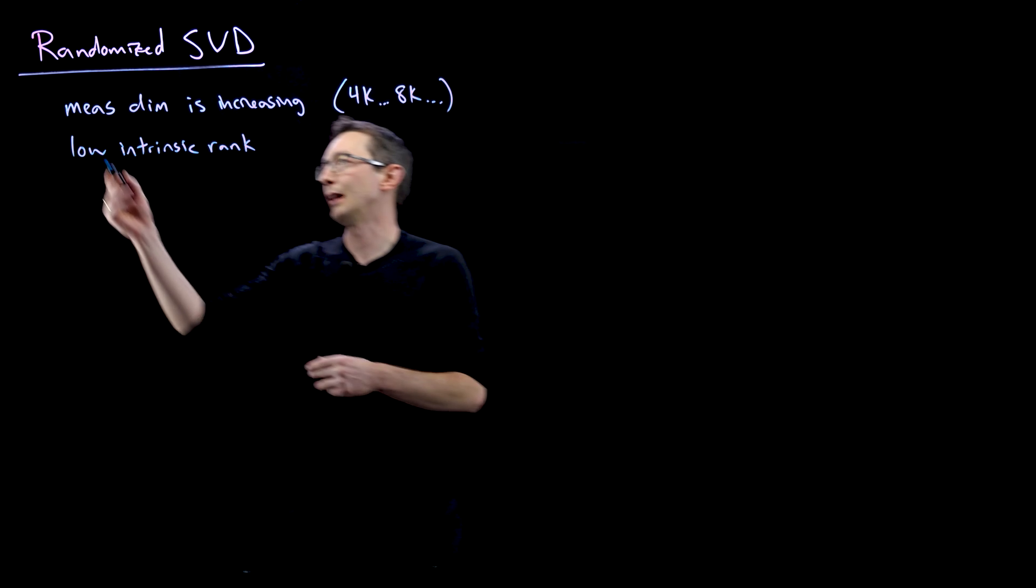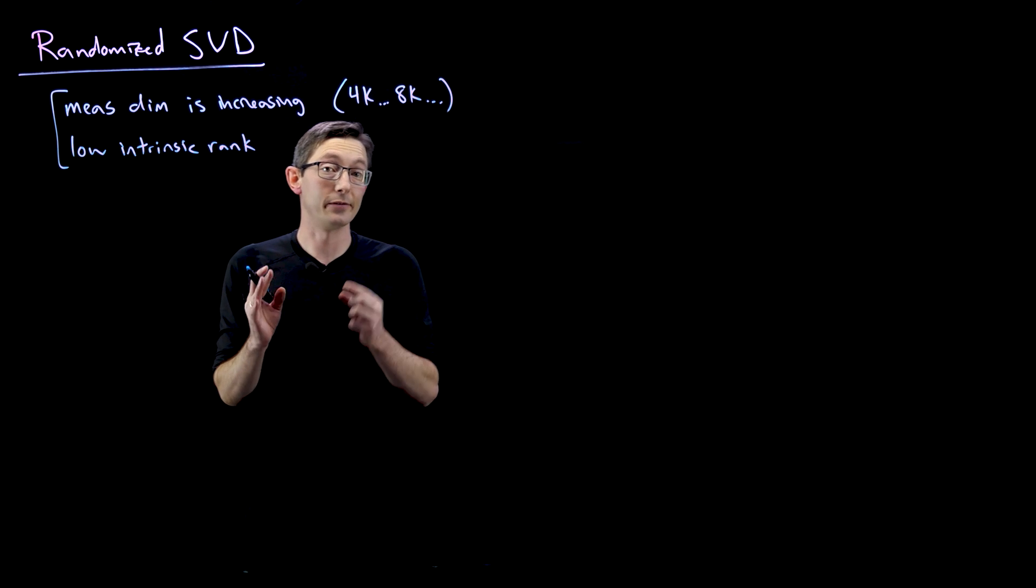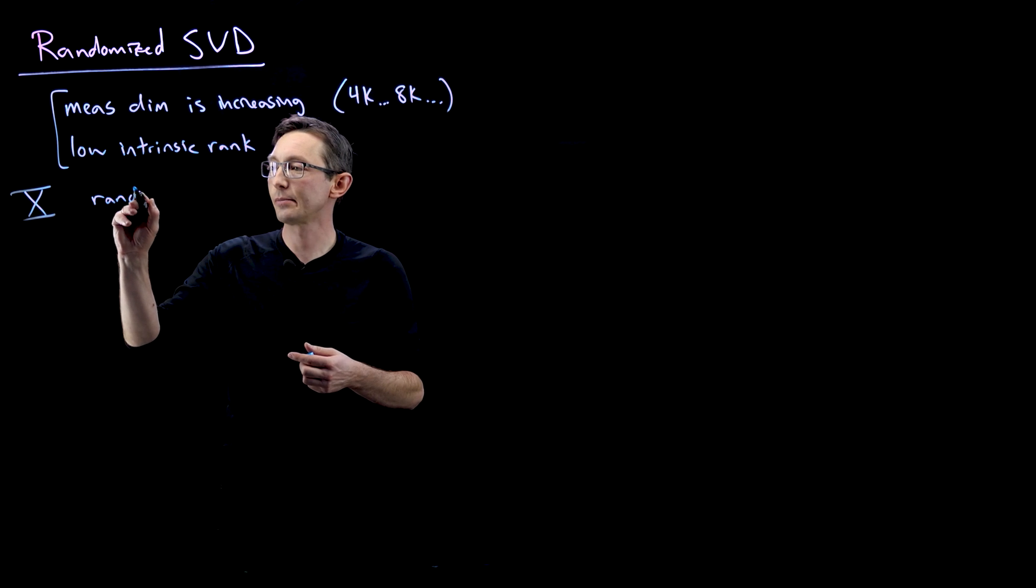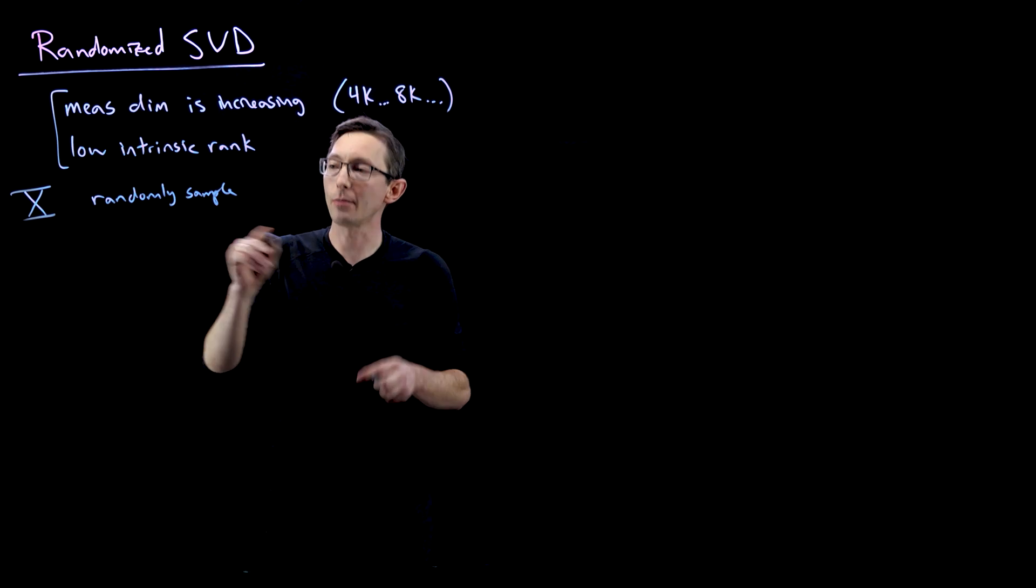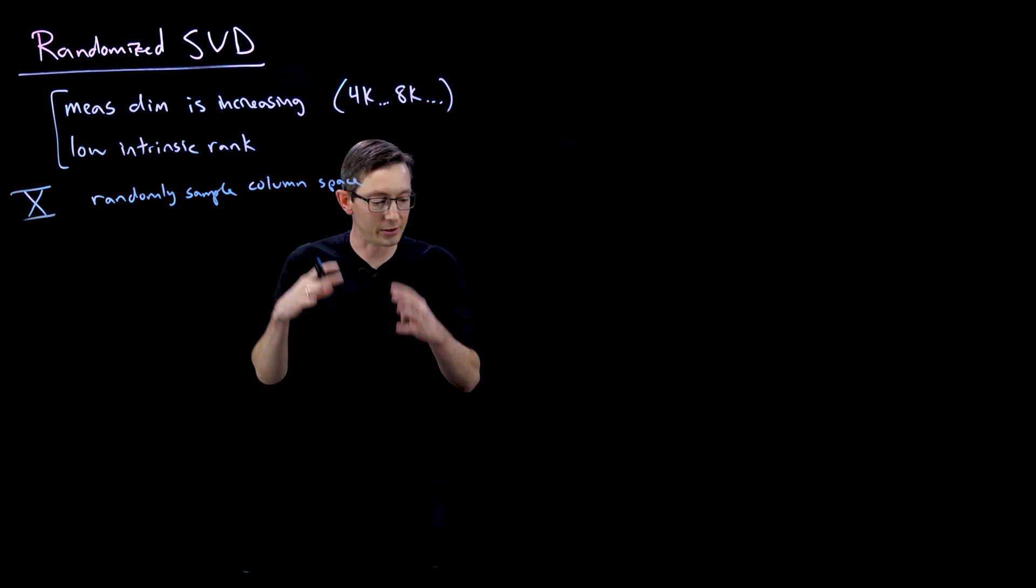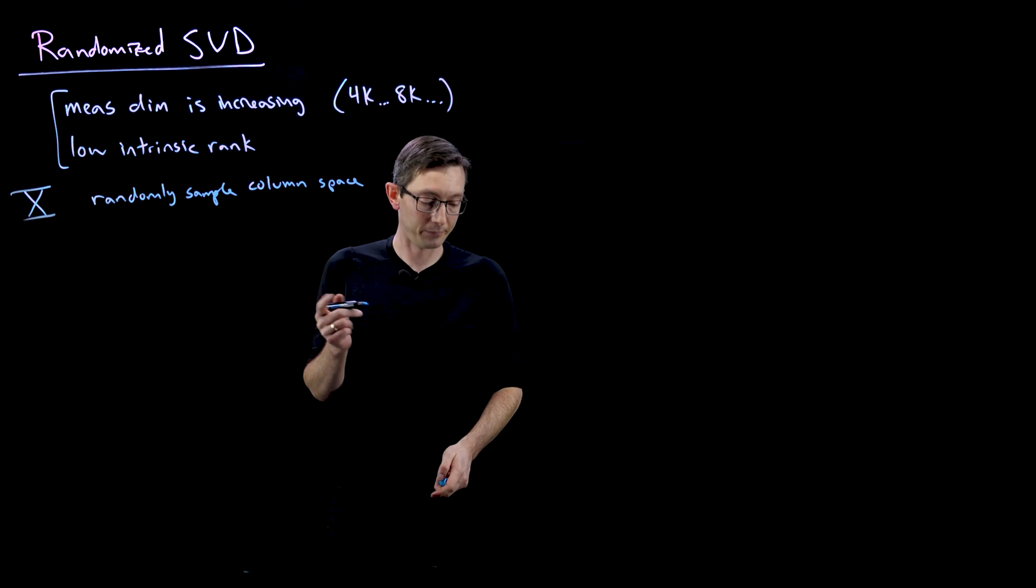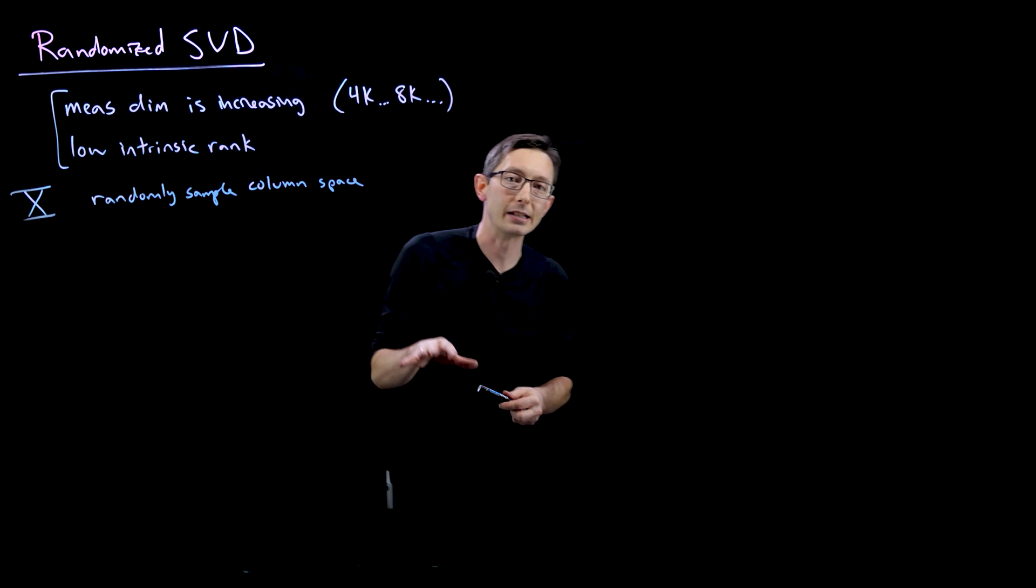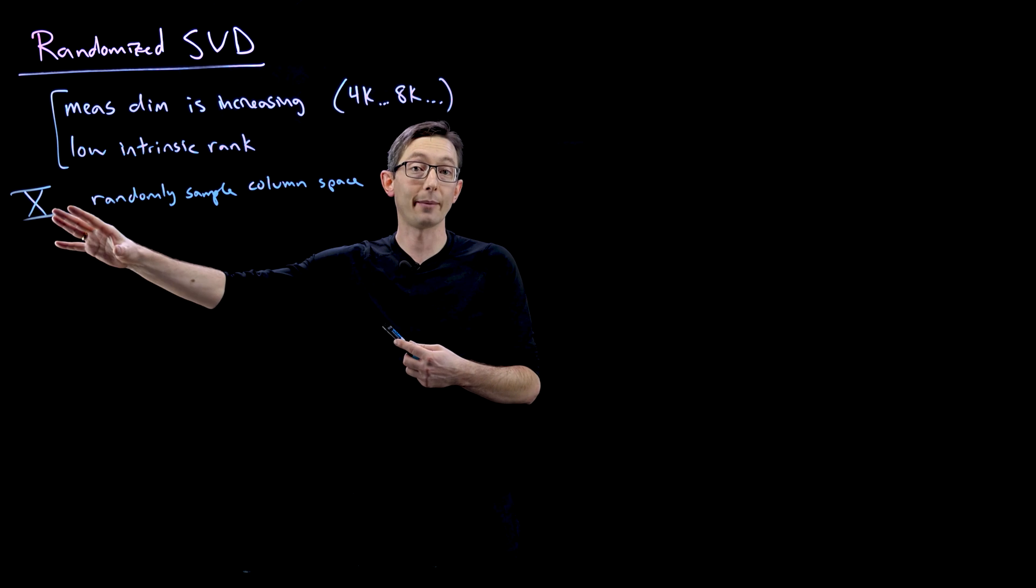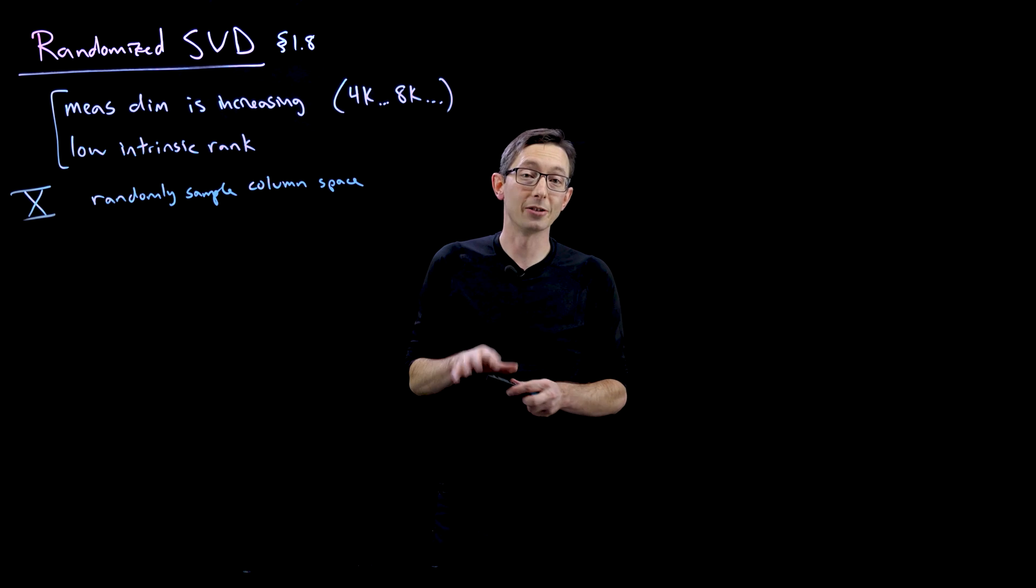And so there's this emerging technique in randomized linear algebra that essentially randomly samples the column space of your matrix X. So you have your X matrix. What we're going to do is we're going to randomly sample the column space. And with high probability, we're going to find the subspace that will be spanned by the dominant columns of that U matrix from the SVD. This relies on high dimensional geometry, some of the same ideas from compressed sensing and high dimensional sparse vectors and high dimensional geometry that we'll talk about in chapter three.